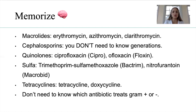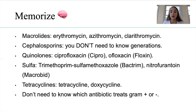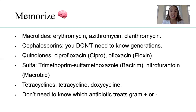Cephalosporins — you don't need to know the generations. That alone can take you a week to memorize, and the boards won't ask you what generation a cephalosporin falls under. Don't waste your brain cells here. Quinolones or fluoroquinolones — this is your Cipro, your floxacins, your Levaquin. When you think about quinolones, think Cipro under the waist — under the belt — for like UTIs, serious UTIs.